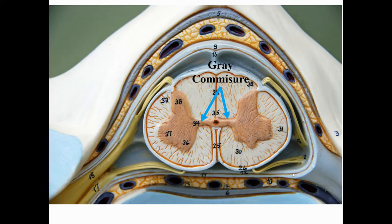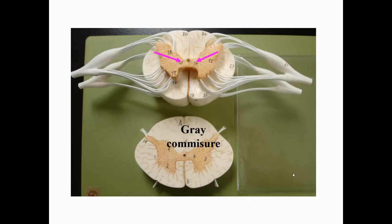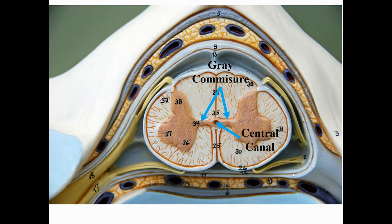This butterfly shape also has a body connecting one side to the other. When something goes from one side to the other it's called a commissure — since it's made of gray matter, it's called the gray commissure. Right in the very center of the gray commissure, the spinal cord is hollow. This hollow space runs the entire length of the spinal cord and is called the central canal, which, like the subarachnoid space, contains cerebrospinal fluid.